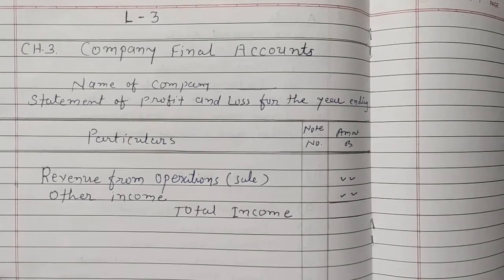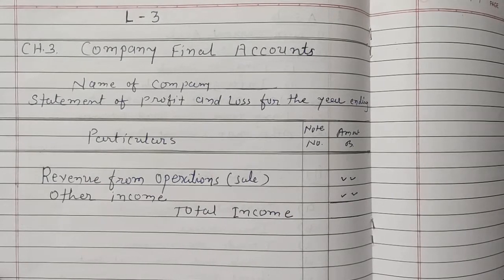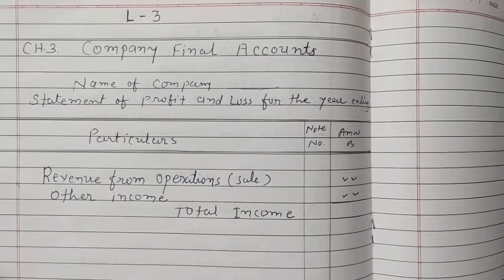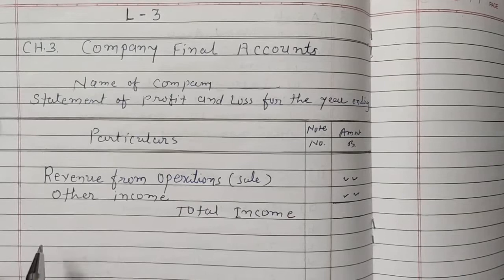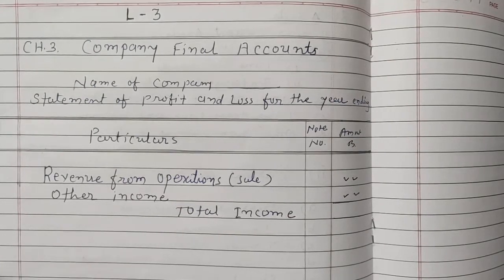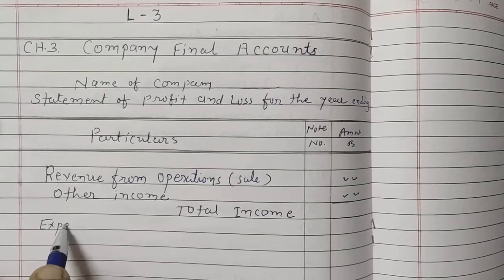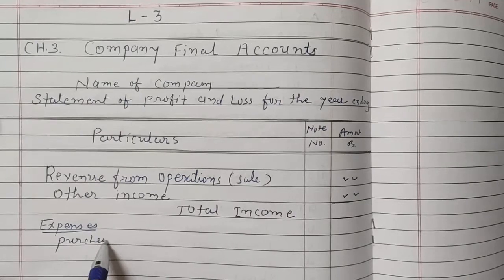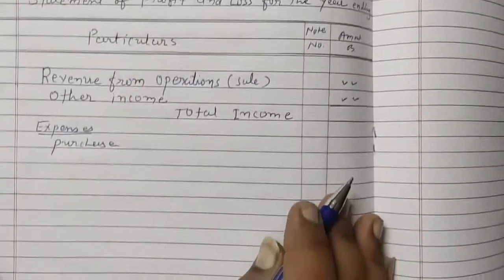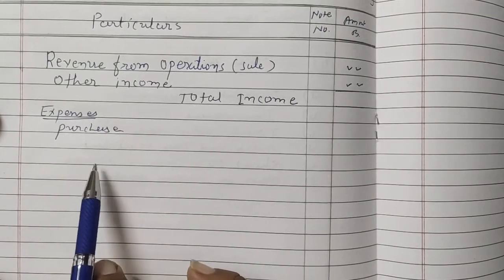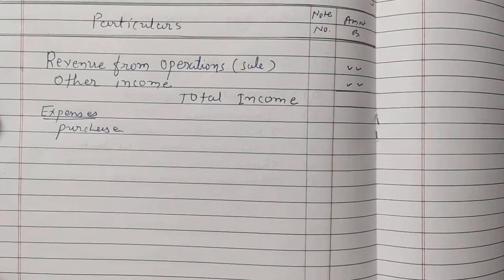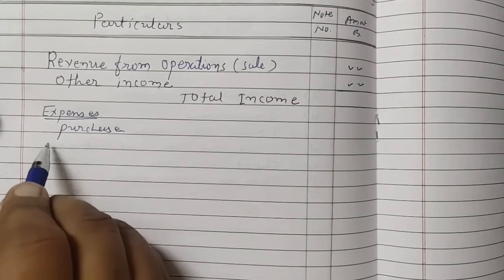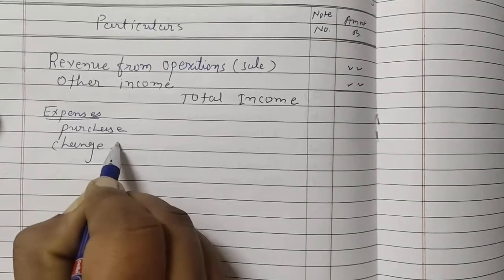Now for the debit side of the trading account and profit and loss account: first, opening stock, then purchases — that's called an expense. Next, opening and closing stock: opening stock is on the debit side, closing stock is on the credit side in the final account. Opening and closing stock together is called Change in Stock.